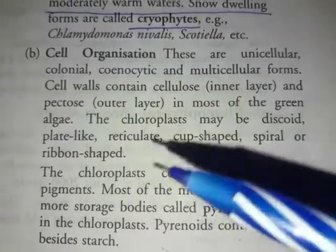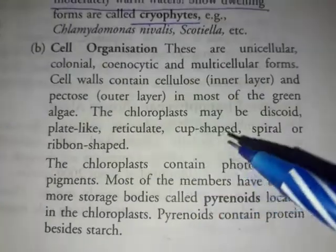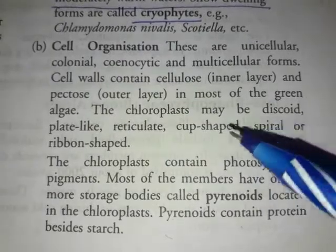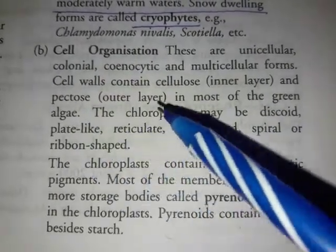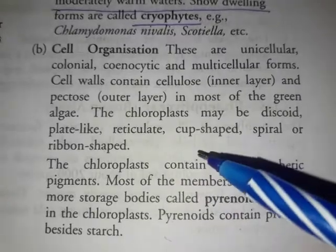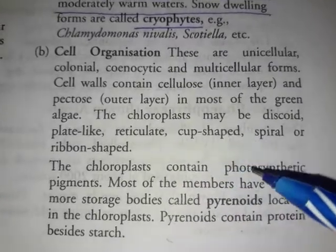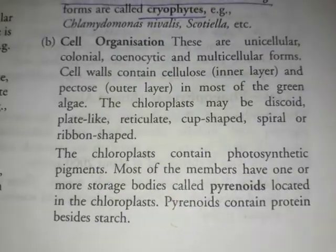The chloroplast may be discoid. You can also have different forms — you can have a plate-like, reticulate, cup-shaped, spiral, or ribbon-shaped chloroplast.